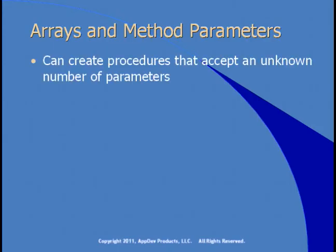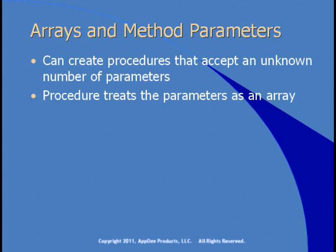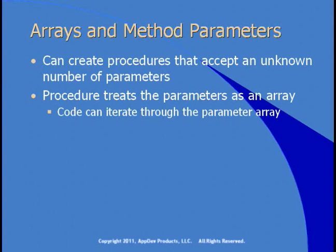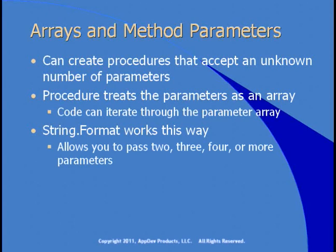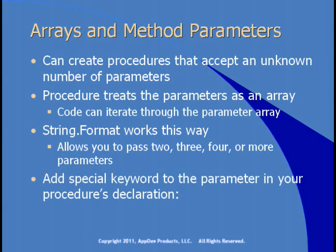You can create procedures that accept an unknown number of parameters — the procedure treats those parameters as an array. Just like passing an actual array, you can pass an unknown number of parameters and the compiler will collapse them down into an array. The code can then iterate through the parameter array. The String.Format method works this way — haven't you noticed? You can pass two, three, four, or more parameters. All it requires is adding the ParamArray keyword to the parameter in your procedure's declaration. ParamArray tells the VB compiler that what follows is an array of parameters, and you can pass as many as you like.